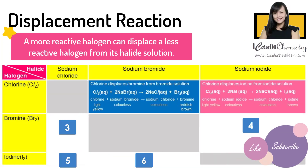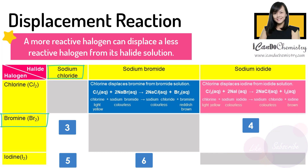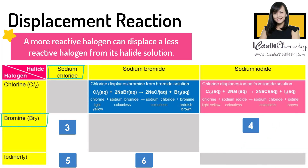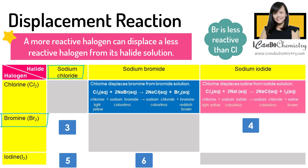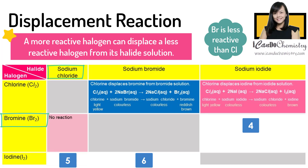Scenario three: aqueous bromine added to chloride solution. Do you expect any reaction when aqueous bromine is added to sodium chloride? Bromine is less reactive than chlorine, hence bromine is unable to displace chlorine from chloride solution. Hence there is no reaction.